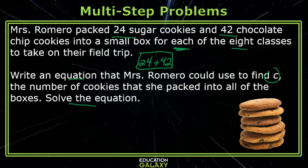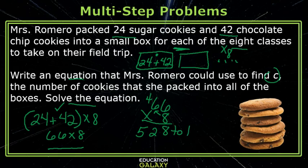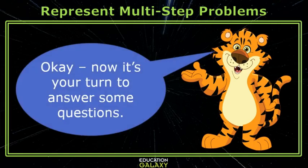We add to get the total in that one box, and she did this for 8 classes. So I first need to add these numbers to get the total in one box, then multiply by 8. The equation is: (24 + 42) × 8. We need parentheses so addition happens first. 24 + 42 = 66, and 66 × 8 = 528. Mrs. Romero packed 528 total cookies. Now it's your turn to answer some questions!